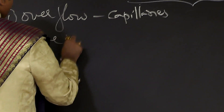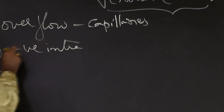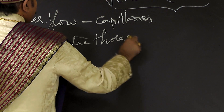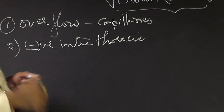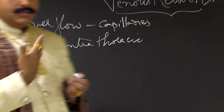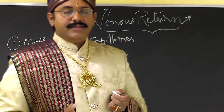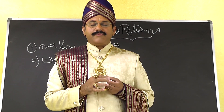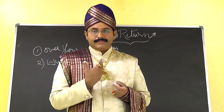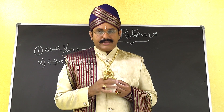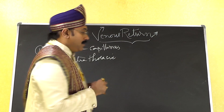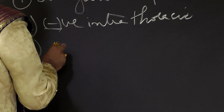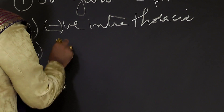The second factor is negative intrathoracic pressure. Blood ascends from the abdomen through the inferior vena cava to the right atrium in the thorax because of the negative intrathoracic pressure. The third factor is muscles — specifically, muscular contractions enable increased venous return.